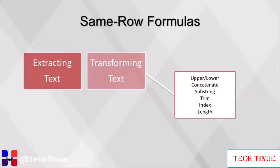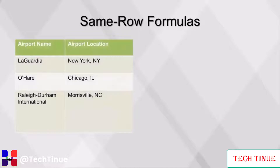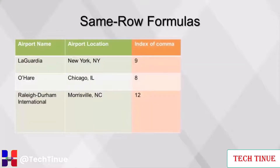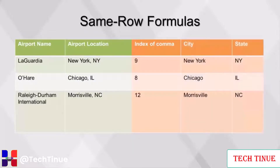For the following example, we will use two functions to transform a field that holds a city and state into two fields. To extract city and state from the airport location field, we would need to extract all the text before the comma as the city field, and everything after the comma and space as the state field. To do this, we need two functions: index and substring. The index function will help us identify the location of the comma in the text field, counting from the left. Then we use the substring function to extract everything before the comma as the city field, and extract everything after the comma and space for the state field. To get the city and state columns back into the format of the original field, we would use a concatenate function.